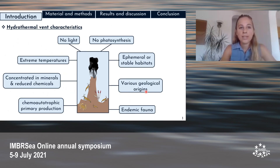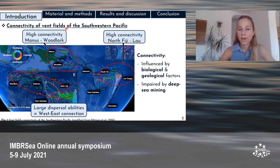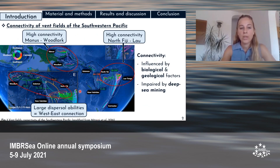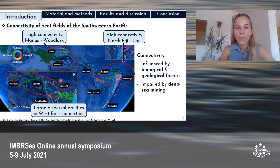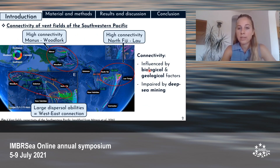Now let's talk about the connectivity of vent fields of the southwest Pacific. In the marine environment, connectivity depends on larval dispersal. Mitarai et al. in 2016 modeled the particulate dispersion at different depths in the southwest Pacific to hypothesize the connectivity among basins. They suggested connectivity across the southwest Pacific for species with long larval dispersal capabilities, and also strong connectivity between Manus and Woodlark basins and North Fiji and Lau basins. The majority of vent organisms have a pelagic and swimming larval stage, which allows for gene flow among the basins.